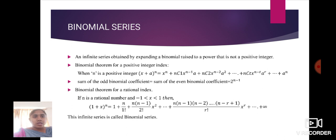In the binomial theorem for positive integer index, the sum of odd binomial coefficients equals the sum of even binomial coefficients, which equals 2^(n-1).